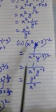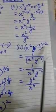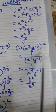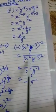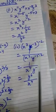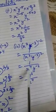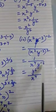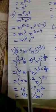Moving on to the next sum: x squared, y to the power minus 3, whole to the power minus 2. If a to the power minus 2, we can write it as 1 by a to the power 2. The same way, we get 1 by x squared, y to the power minus 3, whole to the power 2. Now multiply the power with each — we will get x to the power minus 4, that is y to the power 6 by x to the power 4.